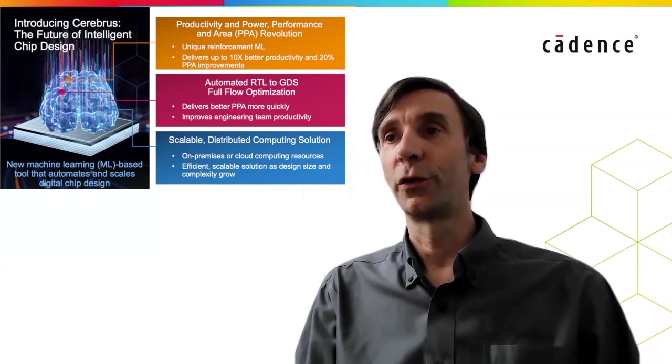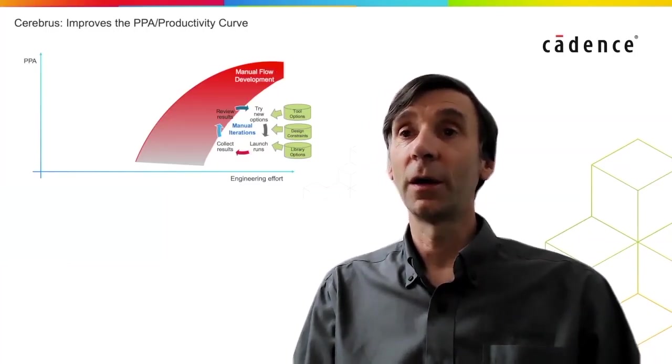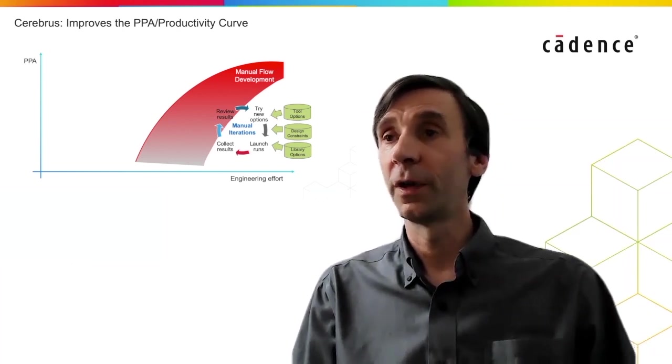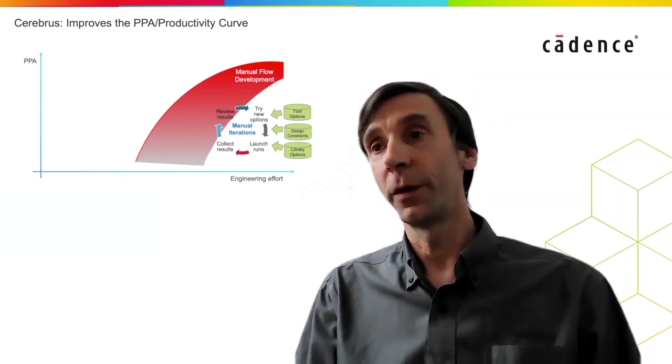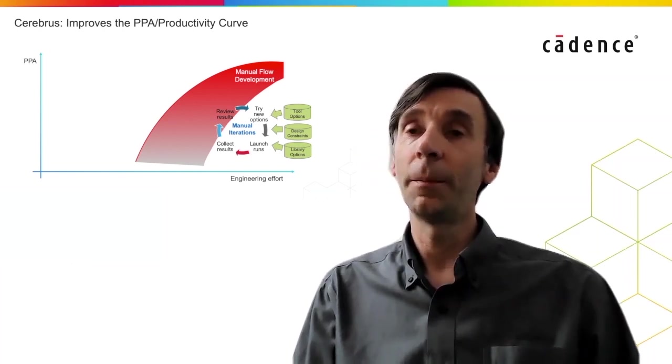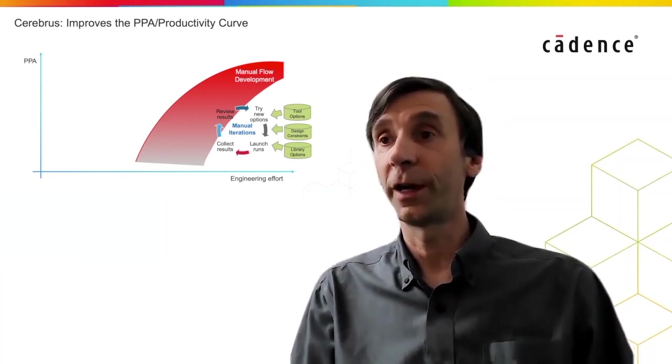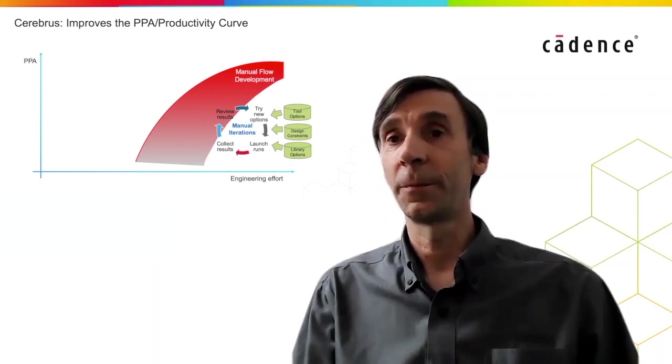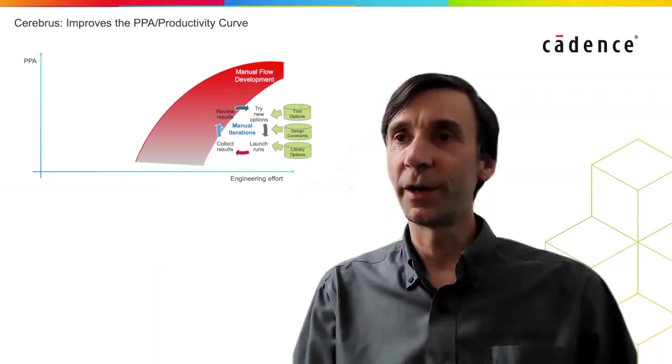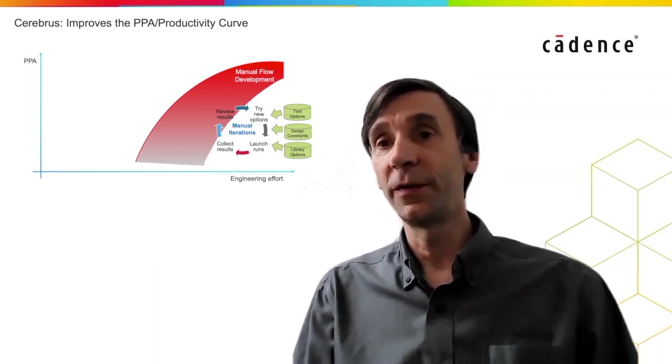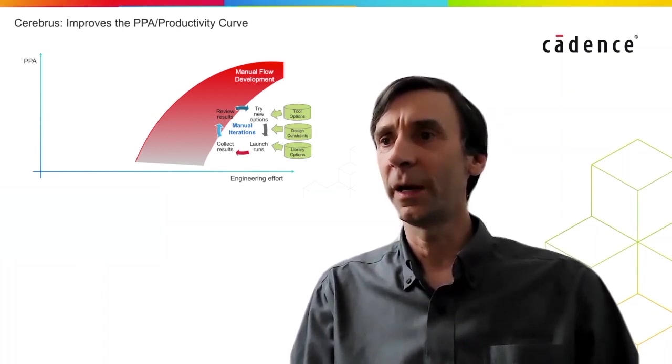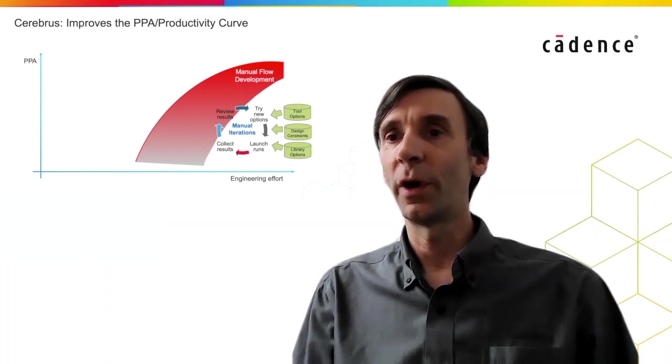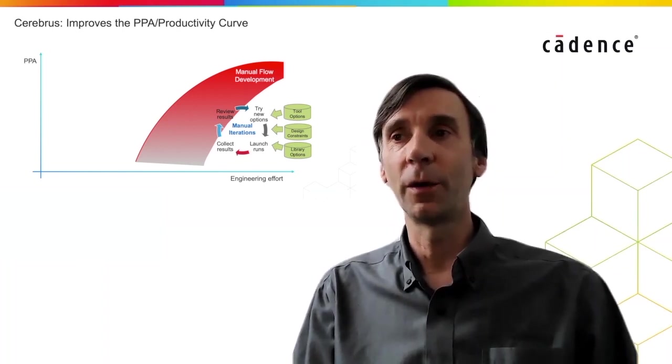Let's take a look at how Cerebrus can improve productivity. The red line shows the current manual iterative flow development process. Designers create an initial flow, run the design to generate some results, and based on these results, decide what to change and then run the flow again. This requires a lot of engineering effort and is generally an inefficient use of compute resources, and often will not result in the best PPA. Even if you add a lot more engineers to the team, PPA may not improve that much.